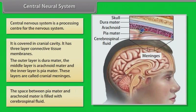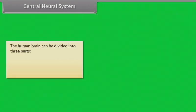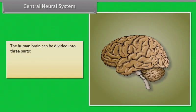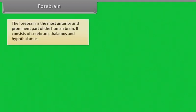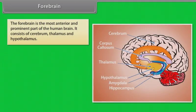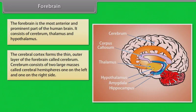The space between the pia mater and arachnoid mater is filled with cerebrospinal fluid. The human brain can be divided into three parts: forebrain, midbrain, and hindbrain. The forebrain is the most anterior and prominent part of the human brain, and it consists of the cerebrum, thalamus, and hypothalamus.